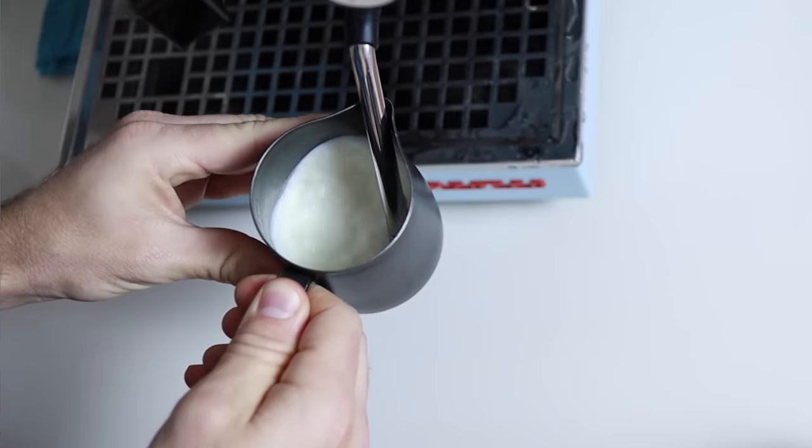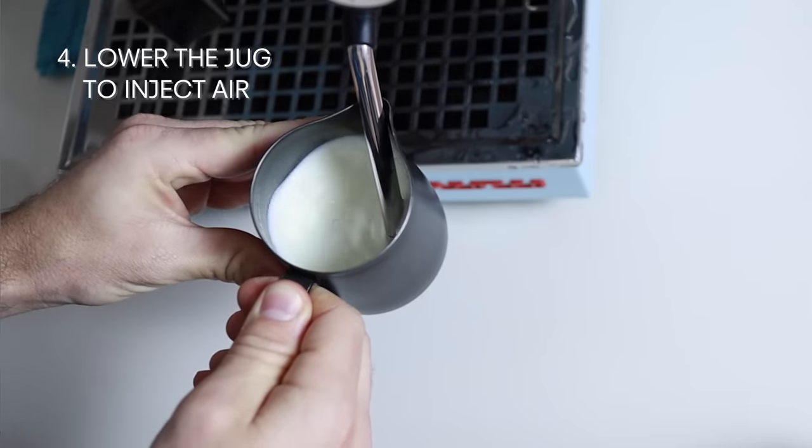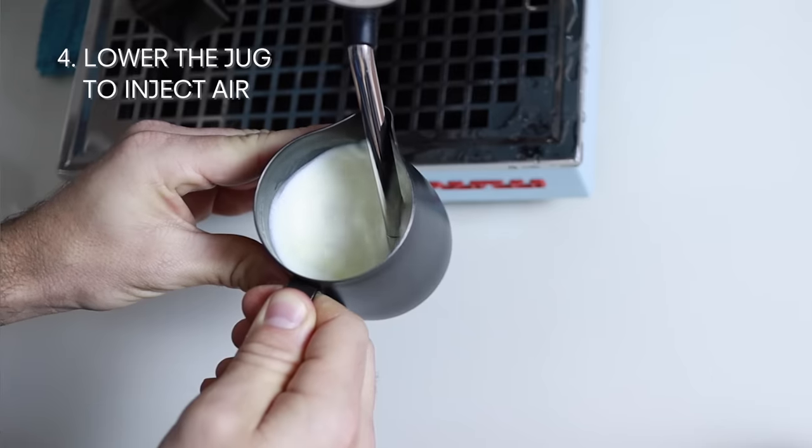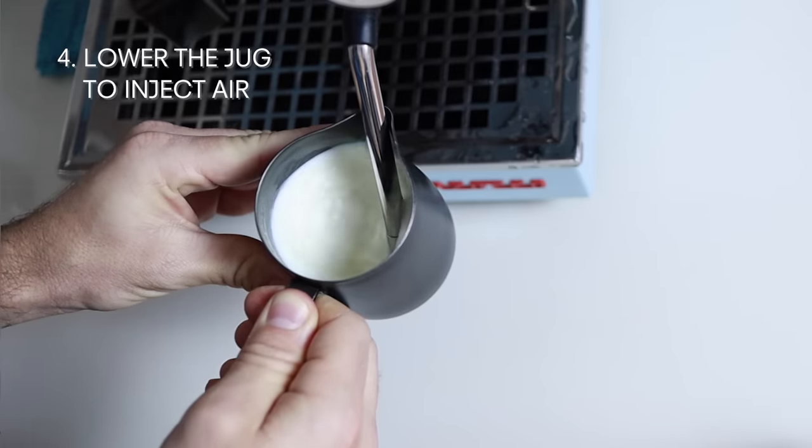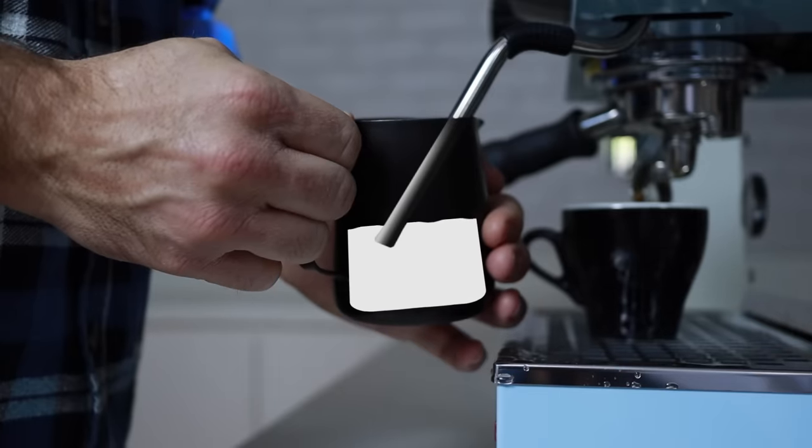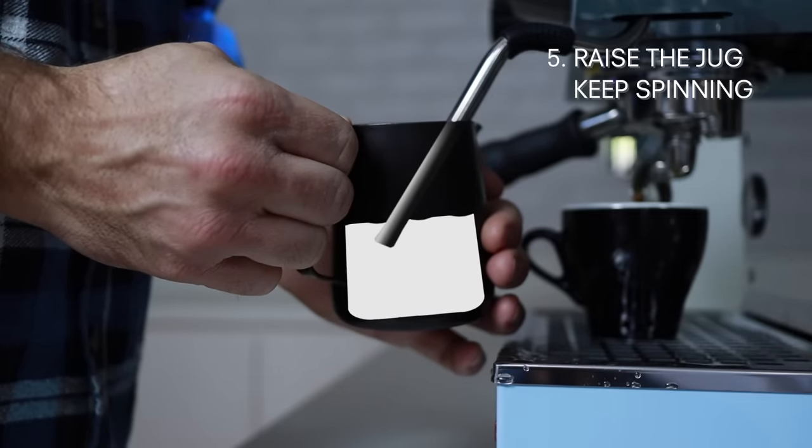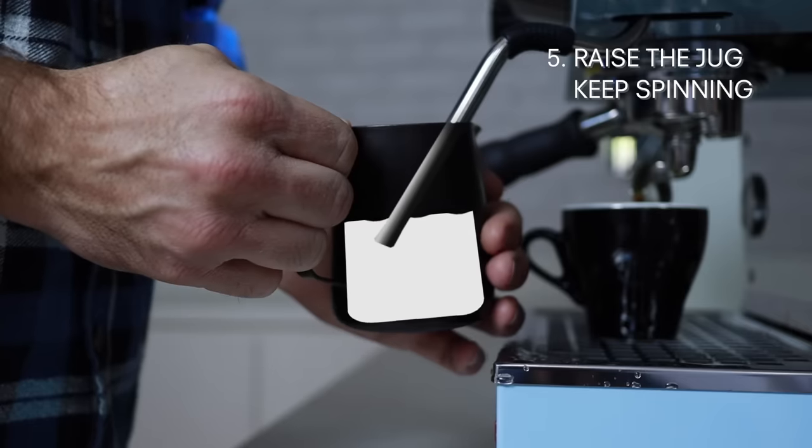Now once the milk is spinning around, we want to lower the jug down a little bit to start injecting the air into the milk. You'll know you've hit the right spot when you hear a steady kissing sound. Next, when the milk has expanded around 20%, we want to raise the jug just a little to stop the kissing sound and let that milk continue to whirlpool.